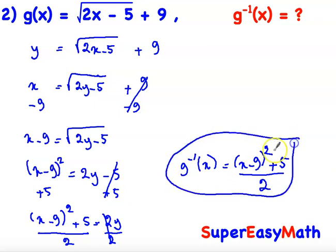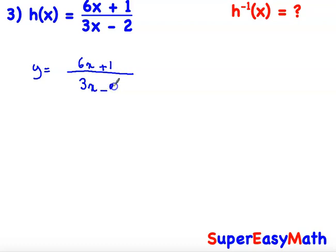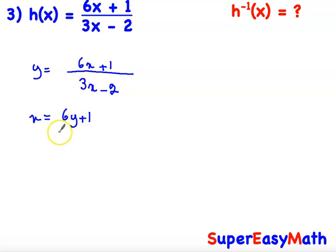Let's take another example. Instead of h(x), we write y = (6x + 1) / (3x − 2). Now replace y by x and x by y, so x = (6y + 1) / (3y − 2).